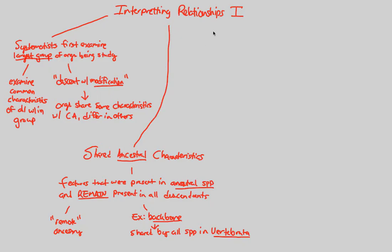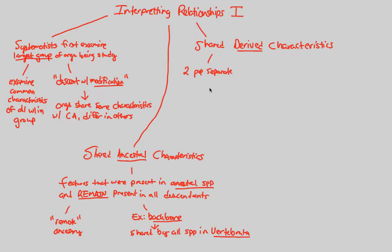Another type of characteristic that gives us a good way to interpret evolutionary relationships is called a shared-derived characteristic. Two populations of a species, when they separate — we know from our study of speciation that this separation happens — once we have geographical and thus reproductive isolation, they will eventually evolve independently of each other because they are no longer mixing their gene pools. The gene pools are separate, and thus the evolution will be separate. This separate evolution means that some previously homologous traits between the two diverged populations will actually evolve into new ones — a derivation happens.